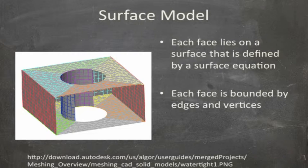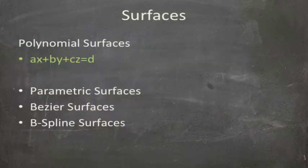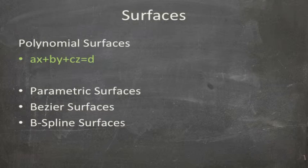The next type of model is the surface model. Basically, each face lies on a surface that is defined by a surface equation. Each face is then bounded by the edges and vertices, as you can see from the picture shown. Surfaces, like curves, can be defined polynomially — for example, AX plus BY plus CZ equals D. Other ways that a surface can be defined are by parametric surfaces, which are patches of surfaces joined together to form a larger surface. We also have Bezier and B-spline surfaces, which are derived from the B-spline and Bezier curves, allowing a bit more control over the surfaces in the 3D Cartesian coordinate.